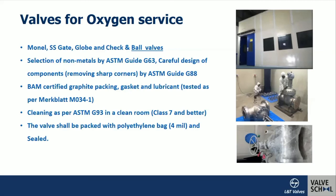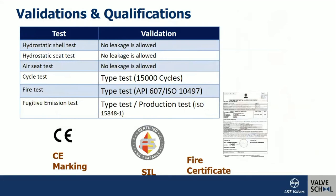Valve qualification includes hydrostatic shell testing with demineralized water (fluoride content less than 50 ppm), hydrostatic seat test, and pneumatic seat test with compressed air. For gas applications, customers can request additional gas testing. Prototype qualification involves a cycle test — normally 15,000 cycles — with some manufacturers performing up to 50,000 cycles for high-frequency applications. Fire-safe testing is performed as per API 607 and ISO 10497.